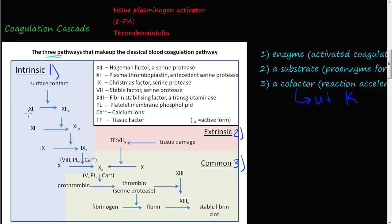In each step there's an enzyme, there's a substrate — a proenzyme — and then that is converted to an activated enzyme. There's a subscript 'A' to indicate that it is now activated.